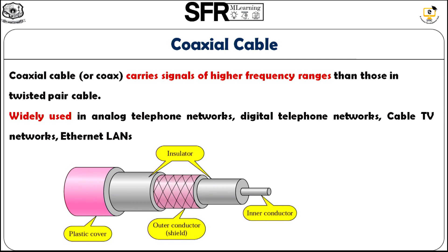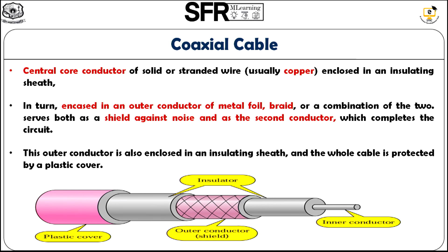Next we move on to coaxial cable, also called coax. It mainly carries signals of higher frequency ranges compared to twisted pair cable. It is widely used in analog telephone networks, digital telephone networks, cable TV networks, and also in Ethernet LAN. As depicted in the figure, coaxial cable consists of a central core inner conductor made of copper used exclusively for communication. Around the copper wire there is an insulating sheet, and around that insulating sheet there is an outer conductor made of metal foil or braid or a combination, used as a shield against noise and as a second conductor. This is surrounded by another insulating sheet and then a plastic cover.